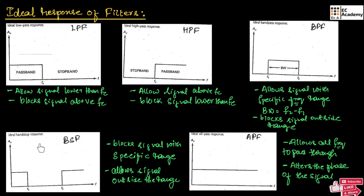This is the ideal response of a band-stop filter. This filter will be exactly opposite to the band-pass filter. As you can observe from this ideal response, this filter will block the signal within a specific range — attenuating the signal between frequencies F1 and F2, and allowing all other frequencies to pass through the filter. So the operation of a band-pass filter is exactly opposite to a band-stop filter.